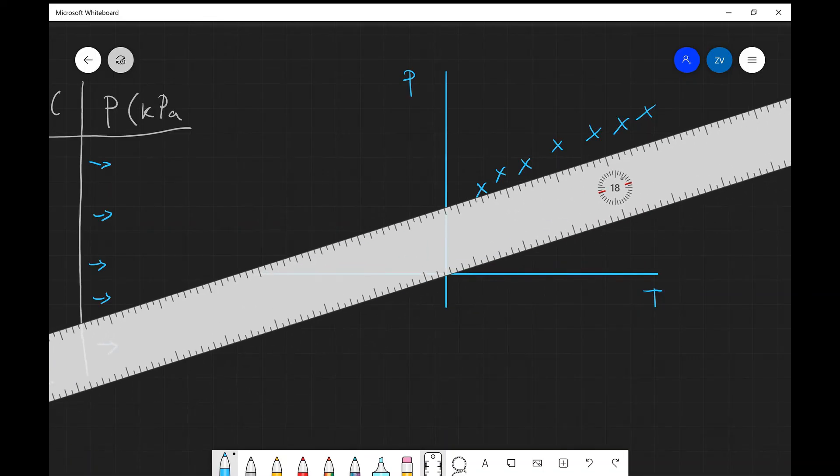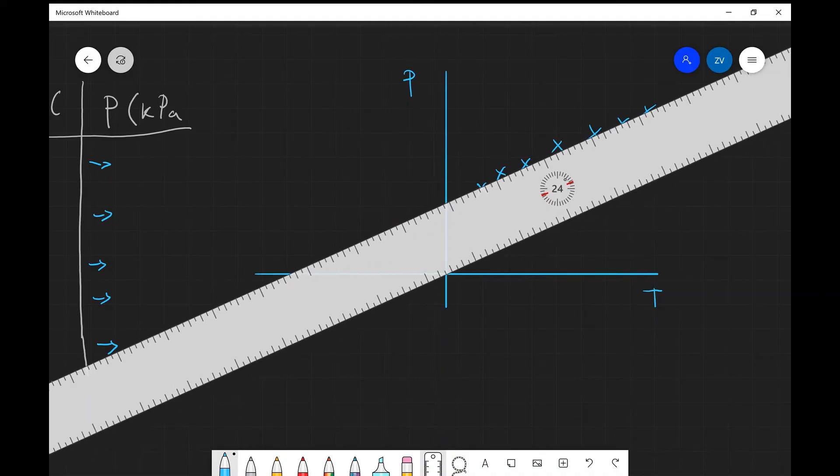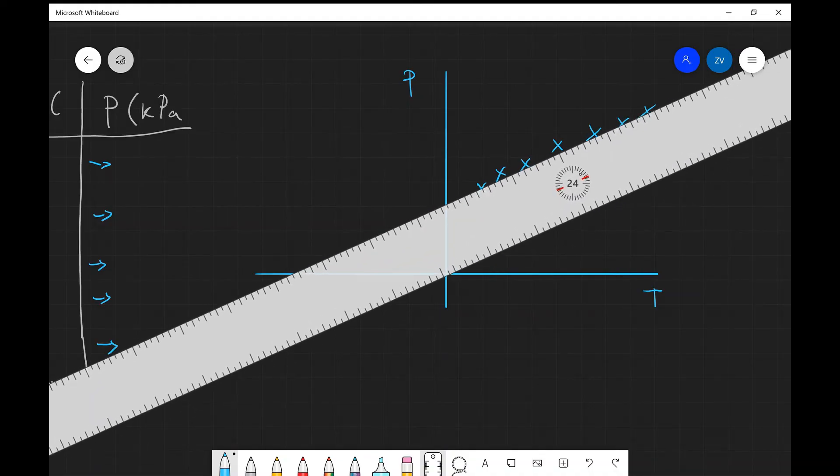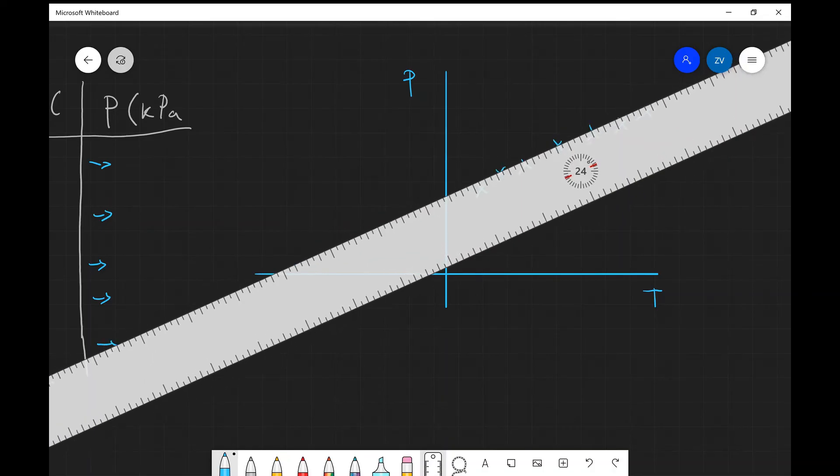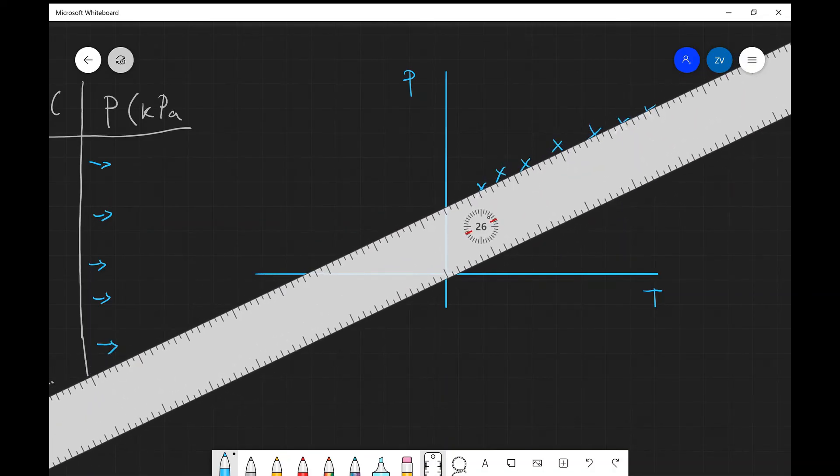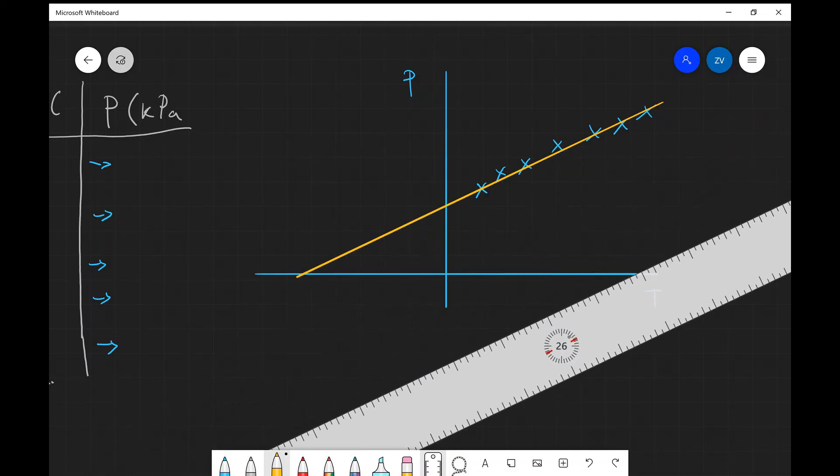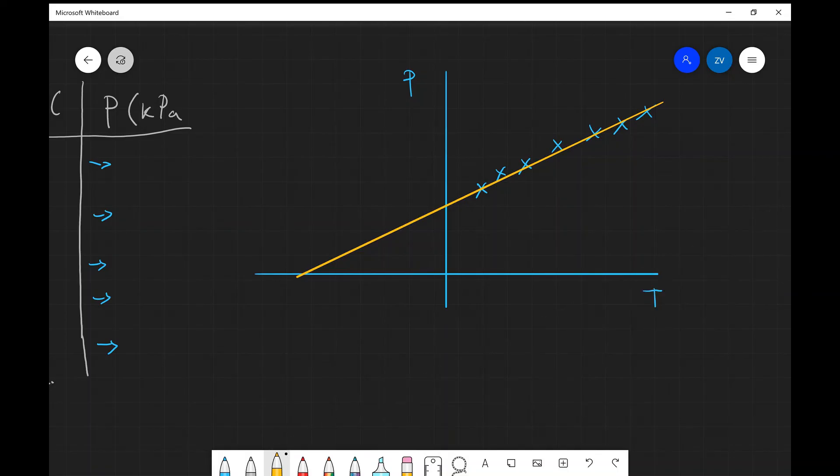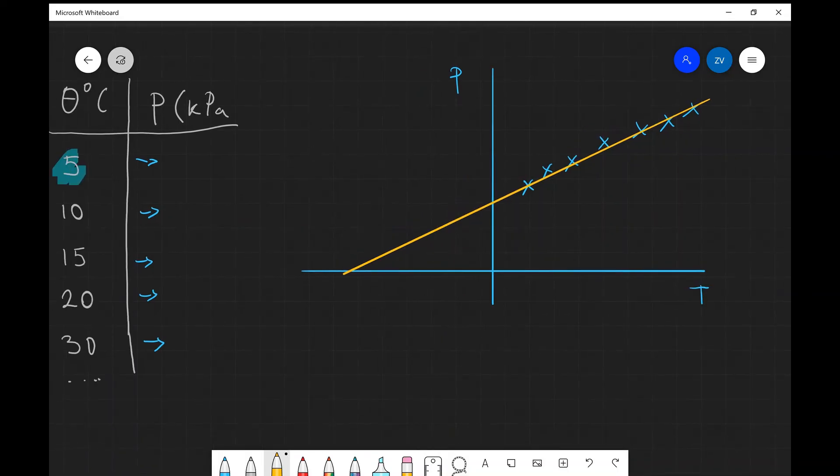So what we can do is use a ruler and draw the line of best fit, and after we've drawn the line of best fit we can then extrapolate to reach that point. Notice something, the x-intercept is negative and you would expect that because absolute zero in degrees Celsius is about minus 273 degrees Celsius, and if you do this experiment really carefully you're going to get very close to that value.